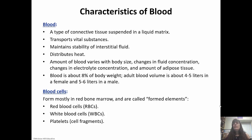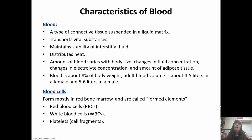Blood is a type of connective tissue. It is the only liquid connective tissue, but it serves a very important function because it transports everything in our body. It also helps distribute heat. When our body needs to warm up, our blood vessels can either dilate or constrict to get blood where it needs to go. It also maintains stability of interstitial fluid, and the amount of blood varies with the amount of adipose tissue that we have.